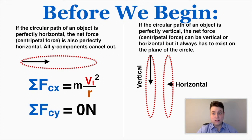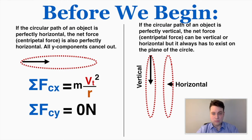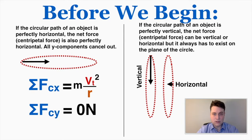If the circular path of an object is perfectly vertical, the net force or centripetal force can be vertical or horizontal, but it always has to exist on the plane of the circle itself. A circle is two-dimensional, and the force always has to exist on that plane — it can never point outside of it. Those two facts are going to be really important for problem solving.